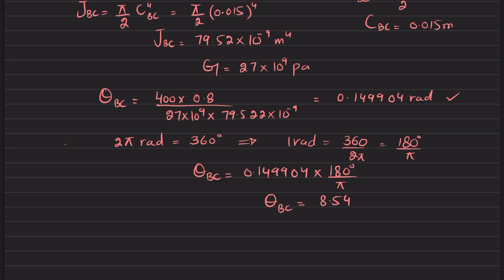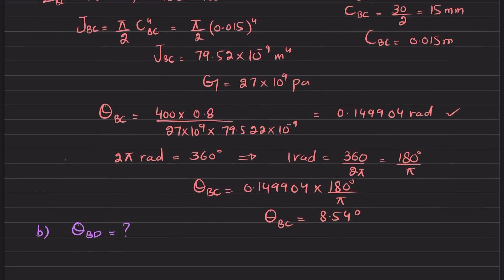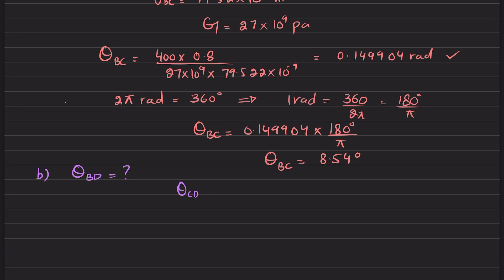Now we move to part B, where we have to find theta_BD. We can see that theta_BD equals theta_BC plus theta_CD. So first we will find theta_CD. Theta_CD equals T_CD times L_CD divided by G times J_CD.